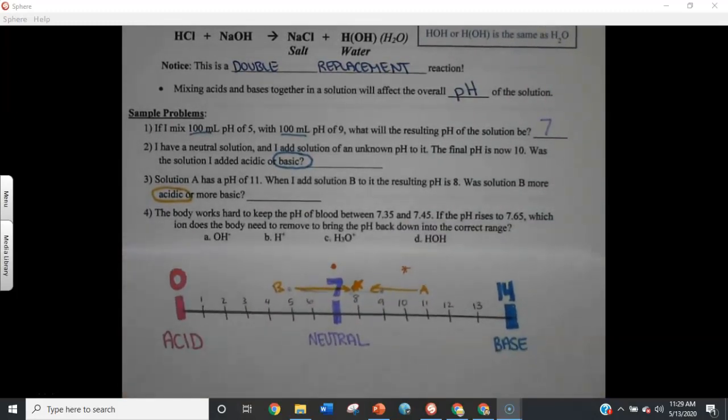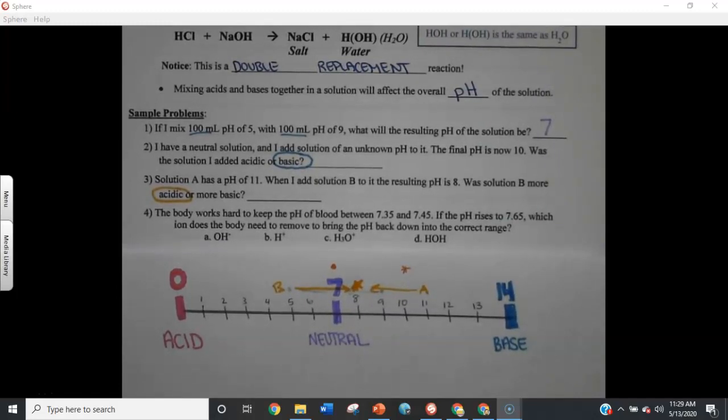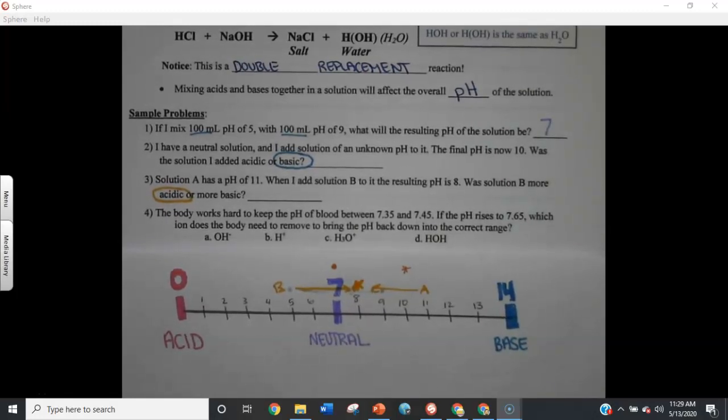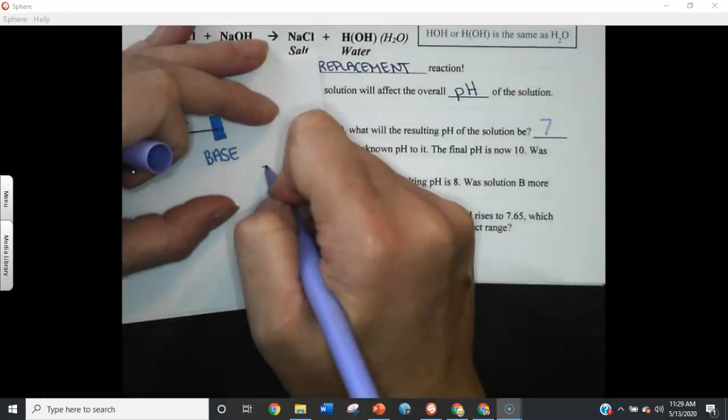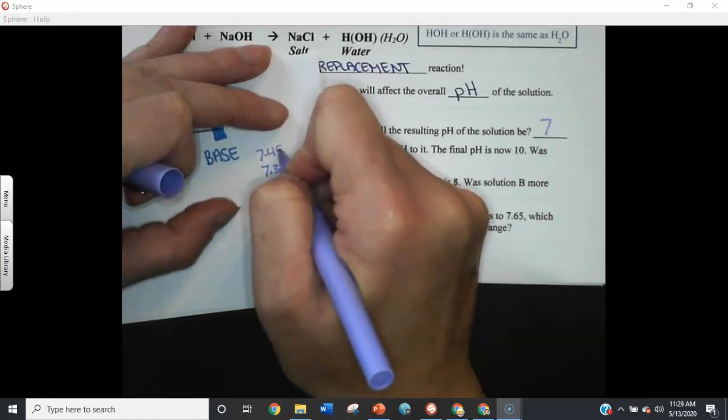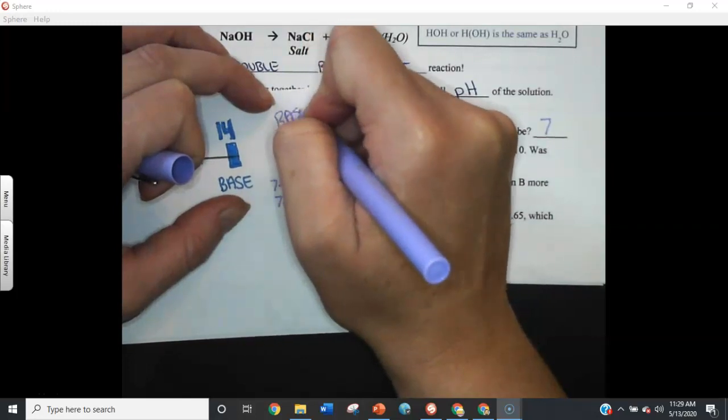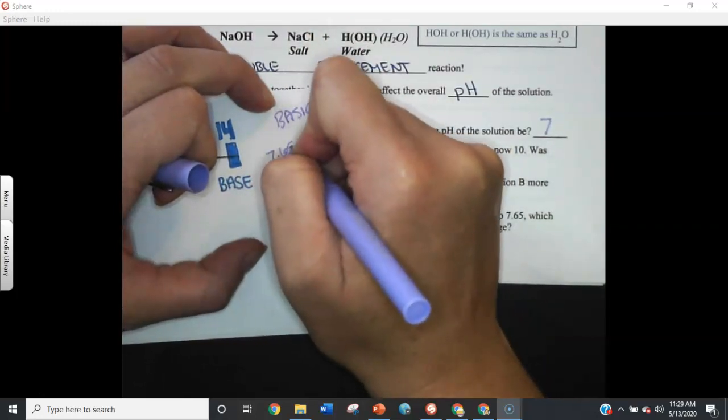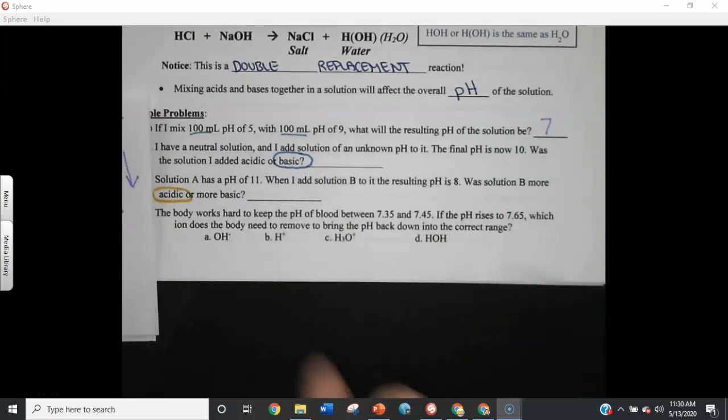Question 4. Oh, I love this question. Question 4 says, the body works hard to keep the pH of blood between 7.35 and 7.45. That's true in physiology. If your blood gets any more acidic or any more basic, you'll black out and then get brain damage very quickly. If your blood pH rises to 7.65, which ion does the body need to remove to bring the pH back down to the correct range? So, let's just real quick sketch this out. I need to be at 7.35 to 7.45. This is where it's safe for my blood to exist in a very, very narrow range. My blood became too basic. I'm up at a 7.65. So, what do I need to do to move back down towards neutral or towards acid? And specifically, it asks, what ion does the body need to remove?